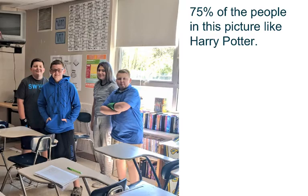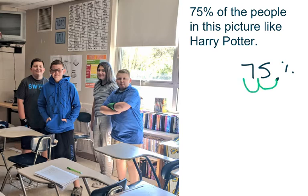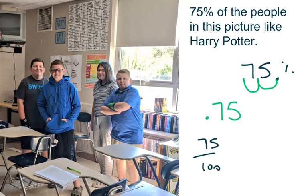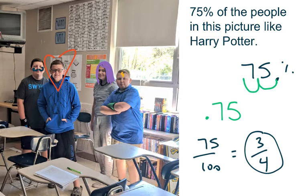Now if you see this in reverse, you're given the percent and not the fraction. We can find the fraction because we can do this backwards. This is 75% of the people in the picture who like Harry Potter. Write it as a percent — the decimal is at the end of 75. To make a percent a decimal, move the decimal two times to the left. So as a decimal you get 0.75, or 75 hundredths, which is 75 out of 100, and that simplifies to 3 fourths. There are four people in the picture, so three of them like Harry Potter.